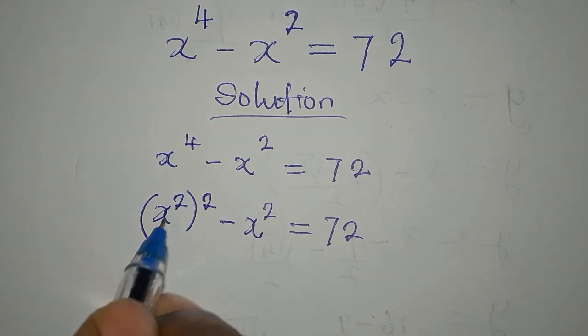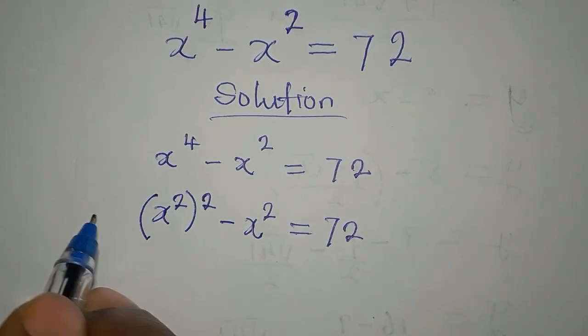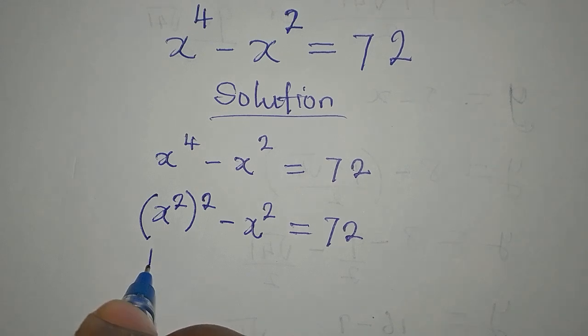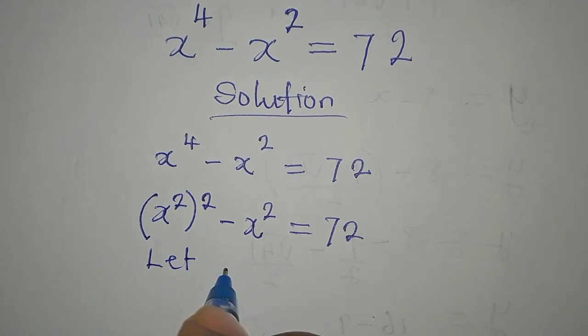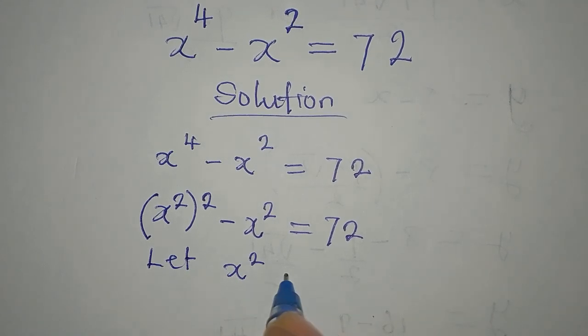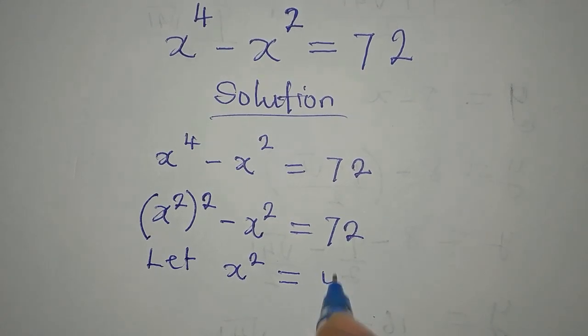Now, I have x squared in two places, right? So let x squared be equal to y. So anywhere I have x squared now, I'm going to write y.